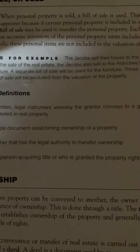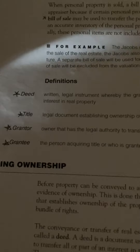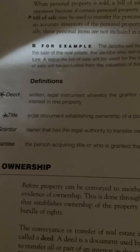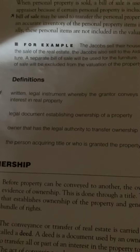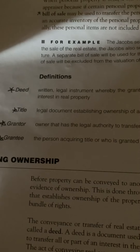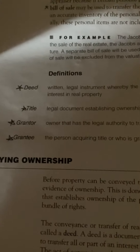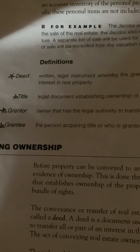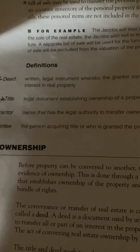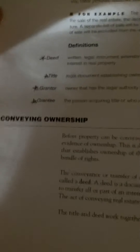Definitions. A deed is a written, legal instrument whereby the grantor conveys to a grantee a right, title, or interest in real property. A title is a legal document establishing ownership of a property. A grantor is an owner that has the legal authority to transfer ownership. A grantee is the person acquiring title or who is granted the property rights.